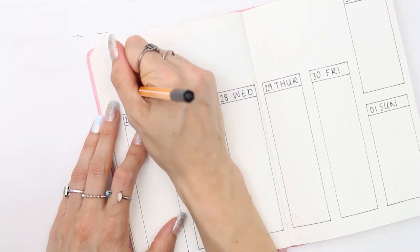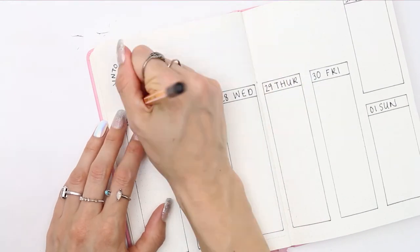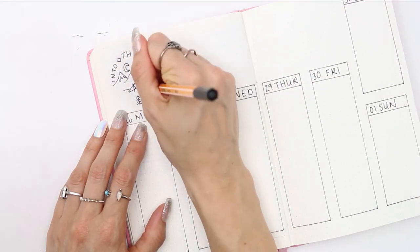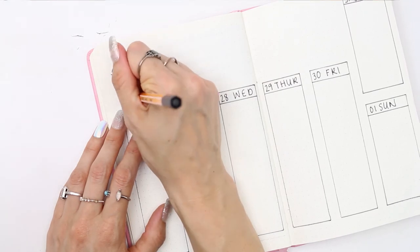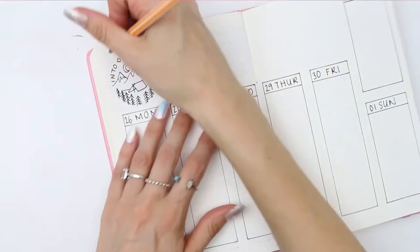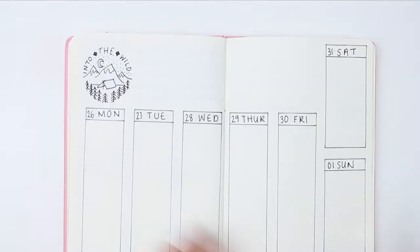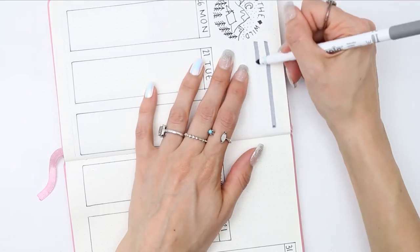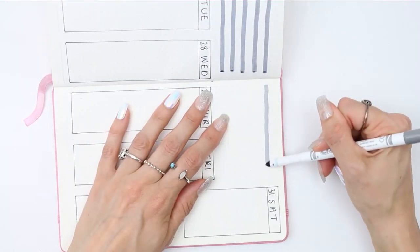For my last weekly spread of August, I decided to do this scene here with a tent. As I said, I'm going to be camping, so August in my household is definitely camping month because we go camping every year in August, sometimes multiple times. I decided to end it with a little tent doodle at the top.